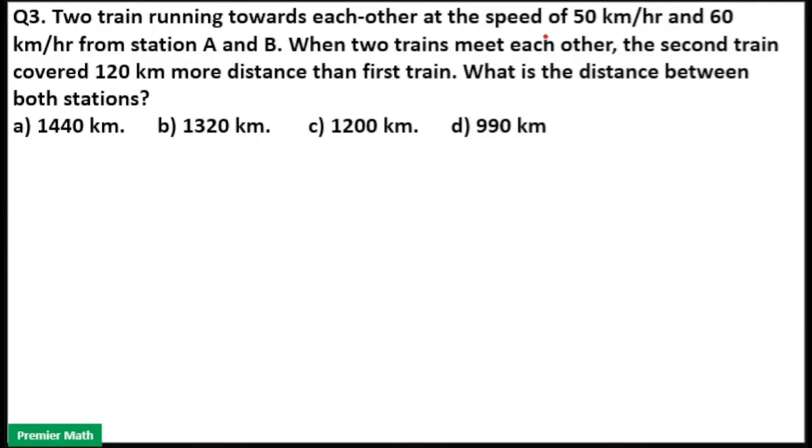Two trains running towards each other at the speed of 50 km per hour and 60 km per hour from station A and B. When two trains meet each other, the second train covered 120 km more distance than the first train. What is the distance between both stations?